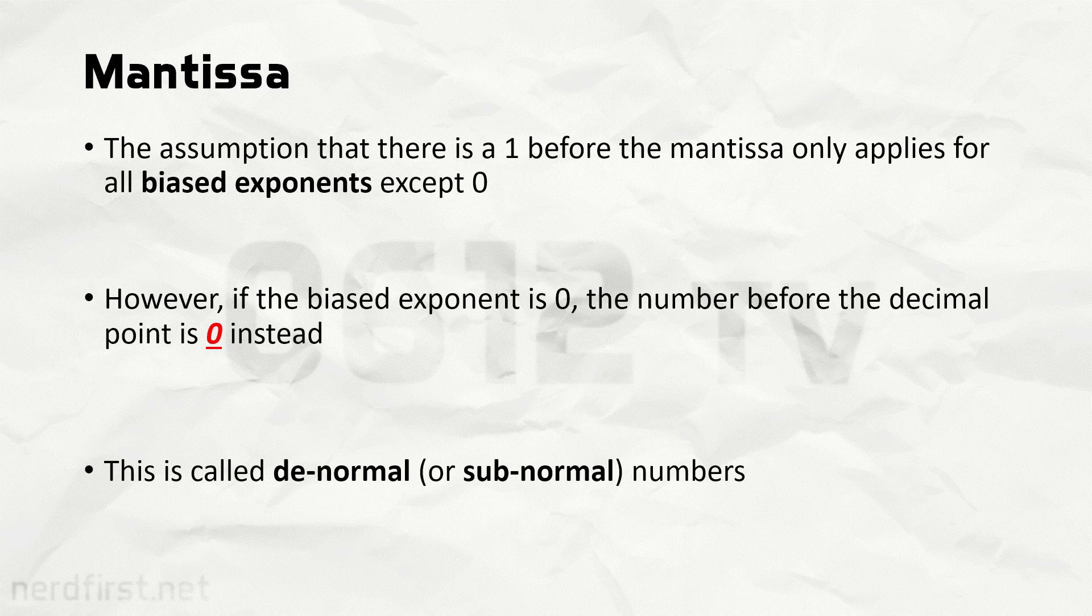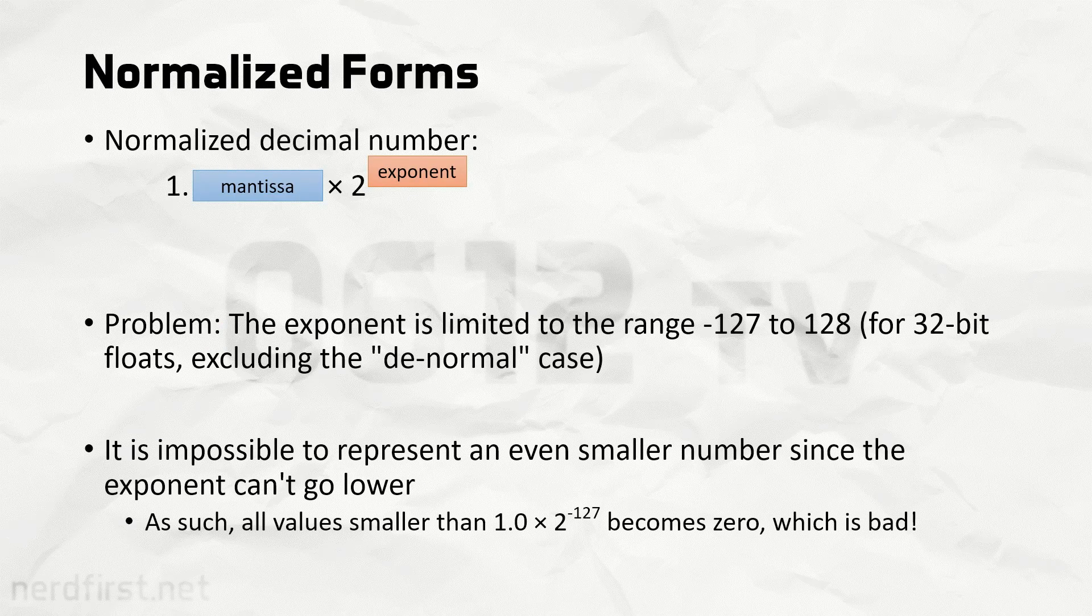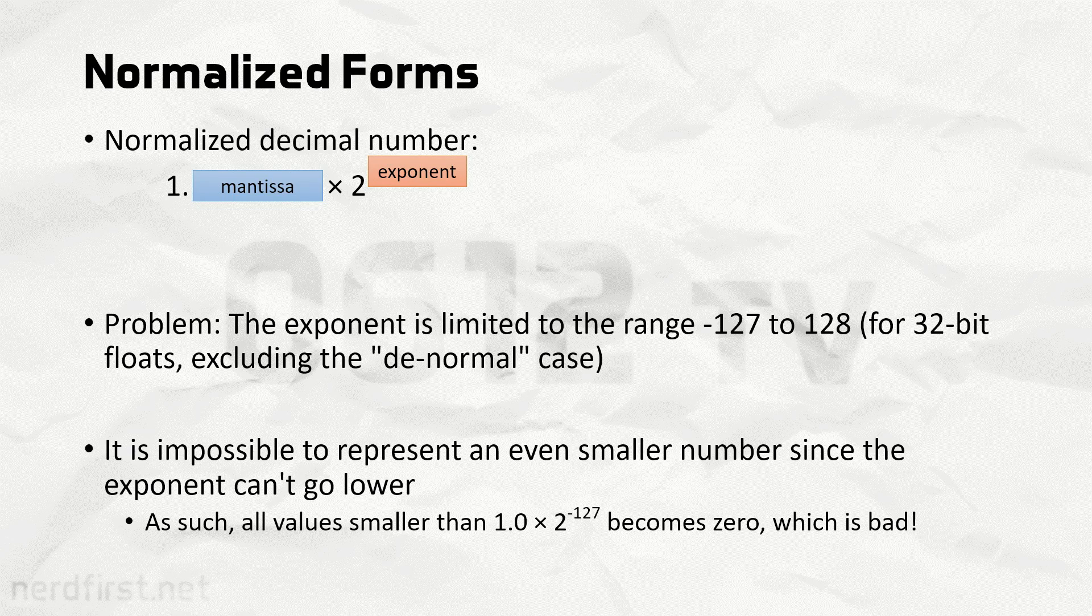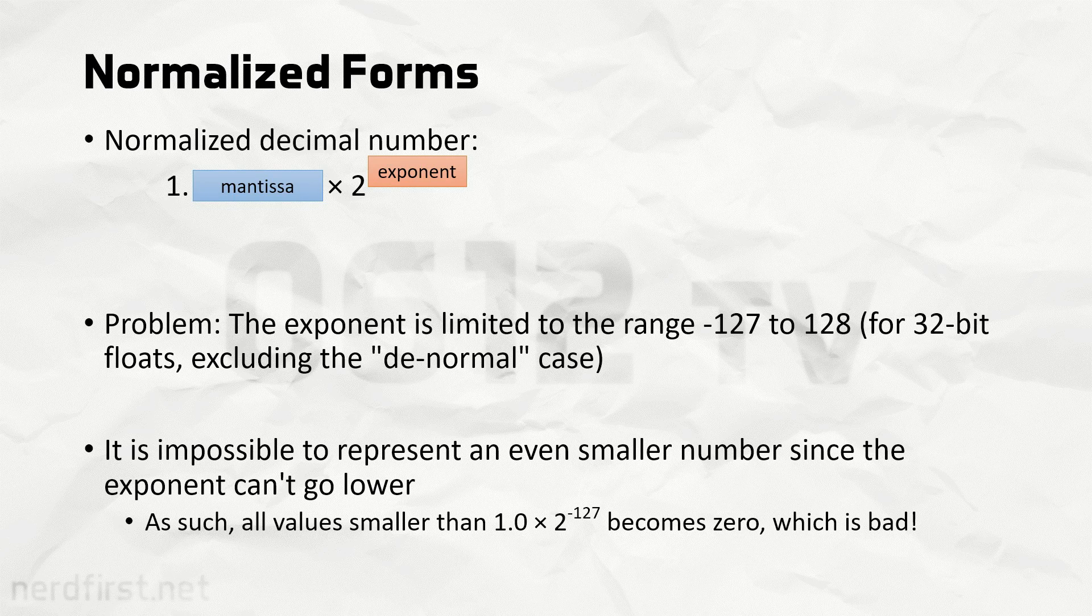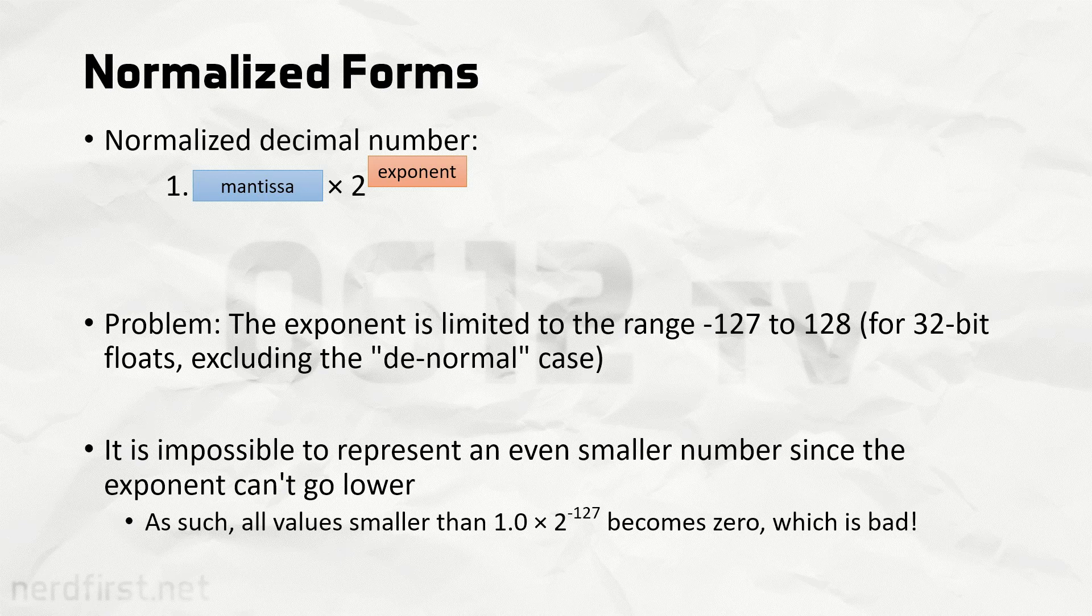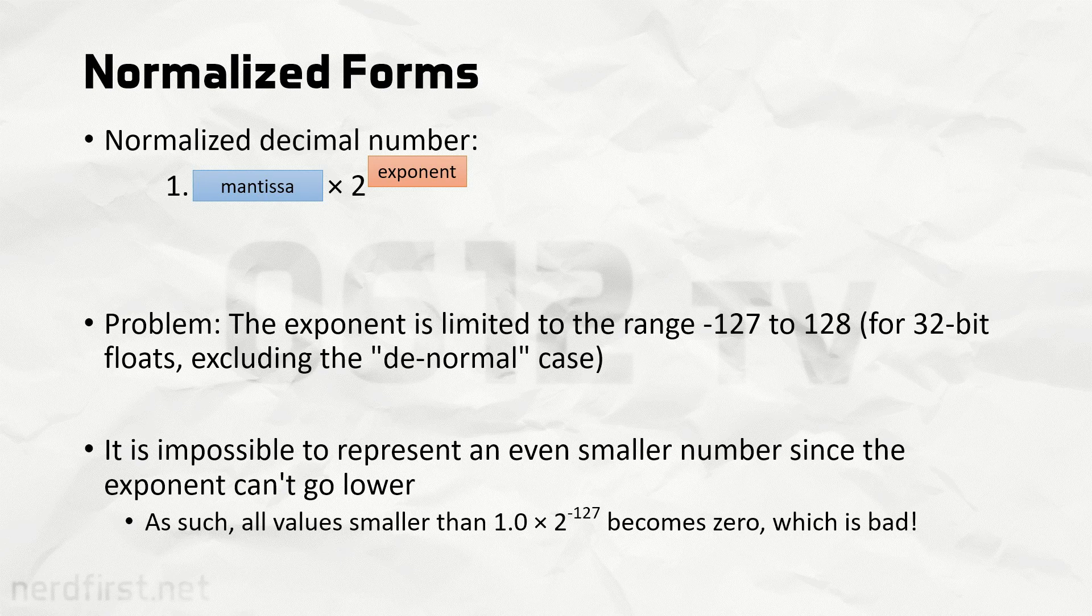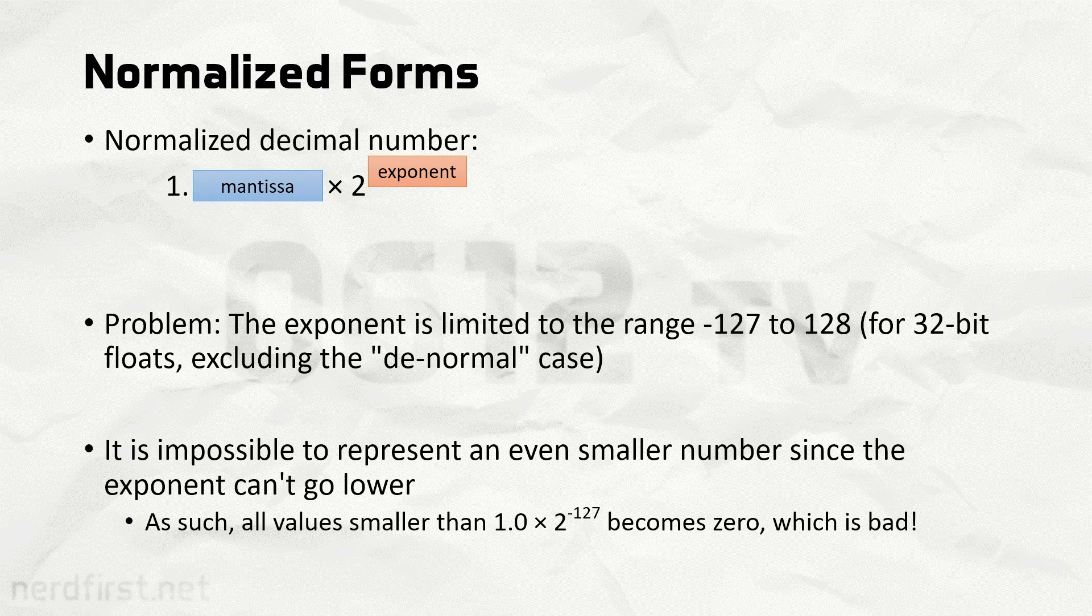You see, usually when we express things as one point something, this is what we call a normalized form. This leads to a problem where when the number gets too small, the normal form doesn't quite capture its value very well. Perhaps there just isn't enough exponent to express that value. And what happens is because of that, the number clips down to zero. And as a result, we lose that number altogether.